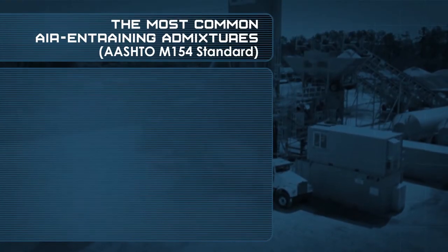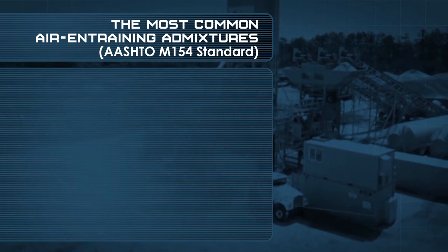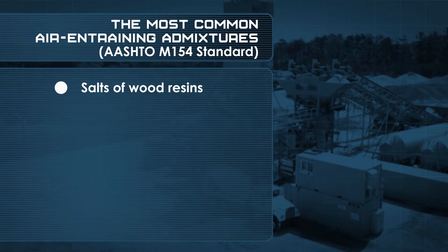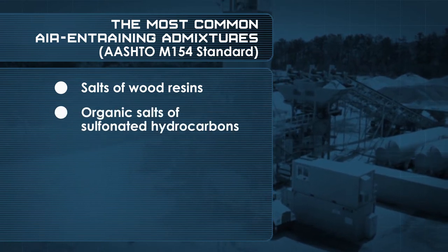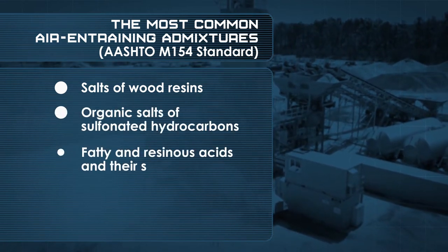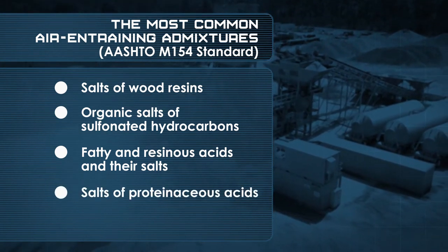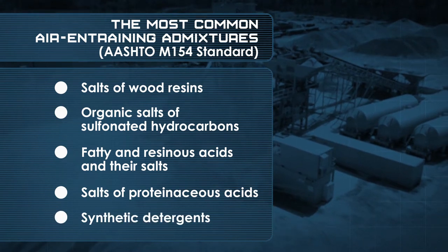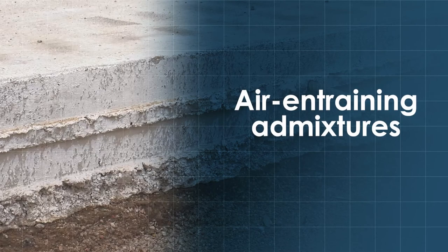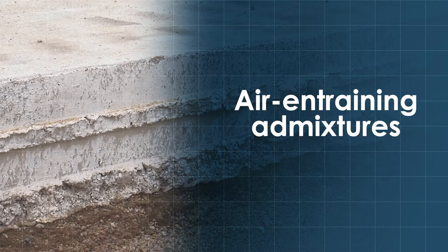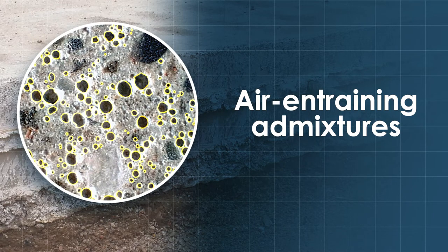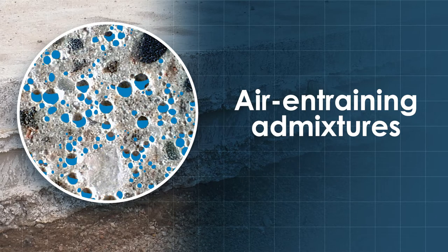The most common air-entraining admixtures follow AASHTO M154 standard and are composed of salts of wood resins, organic salts of sulfonated hydrocarbons, fatty and resinous acids and their salts, salts of proteinaceous acids, and synthetic detergents. Air-entraining admixtures work with the air-water interface to create stable air bubbles in fresh concrete as it is mixed. The bubbles remain once the concrete is hardened to help protect the concrete against damage from freezing and thawing.